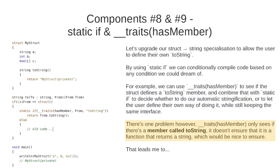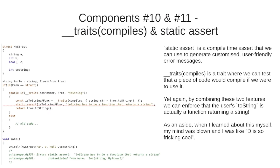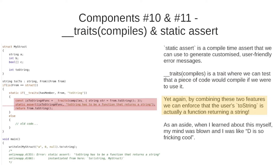There's one problem however: hasMember only checks if there is a member named toString — it doesn't ensure that it is a function that returns a string. That leads us to our next components: __traits compiles and static assert. Static assert is a compile-time assert that we can use to generate customized user-friendly error messages. __traits compiles is a trait where we can test that a piece of code will actually compile if we were to use it. By combining these two features we can enforce that the user's toString is actually a function that returns a string — when I learned about this my mind was blown, it's so cool.